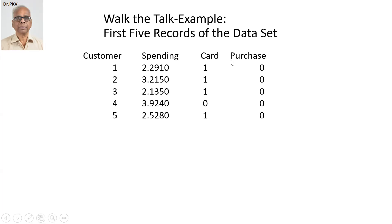Card is the other predictor variable. Purchase is the target variable, which is zero or one. Spending is measured in thousand dollars and this is the display of the first five records. Card is a categorical predictor variable, zero or one.